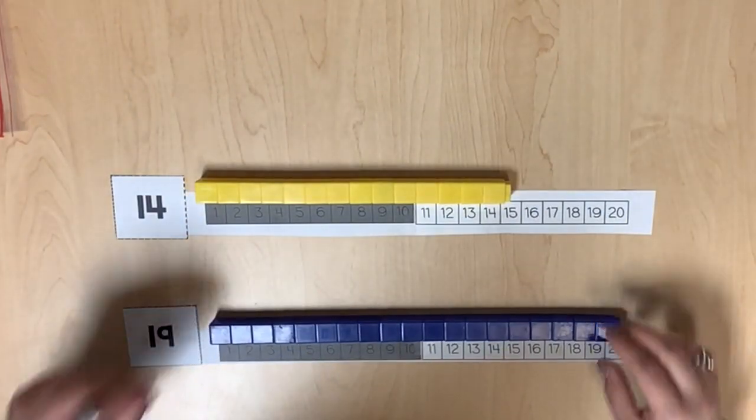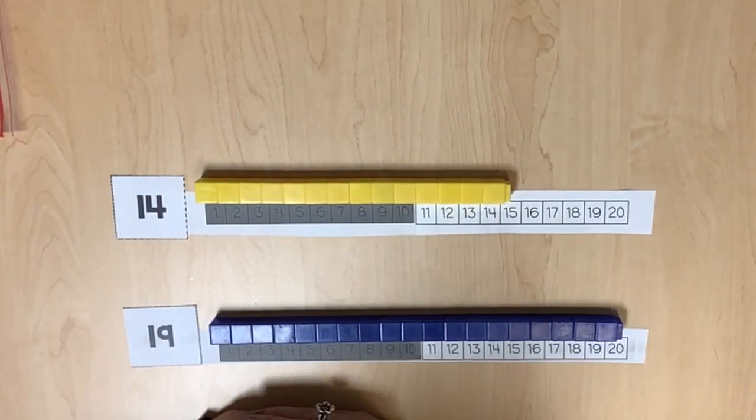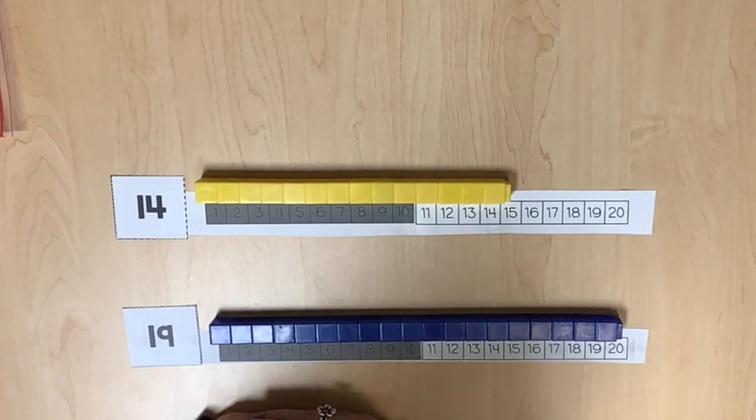Some students may need to represent 10 in one color and 4 in another color. Others may represent 10 and count on 4 more for a quantity of 14. The same approach may be utilized for the quantity of 19.